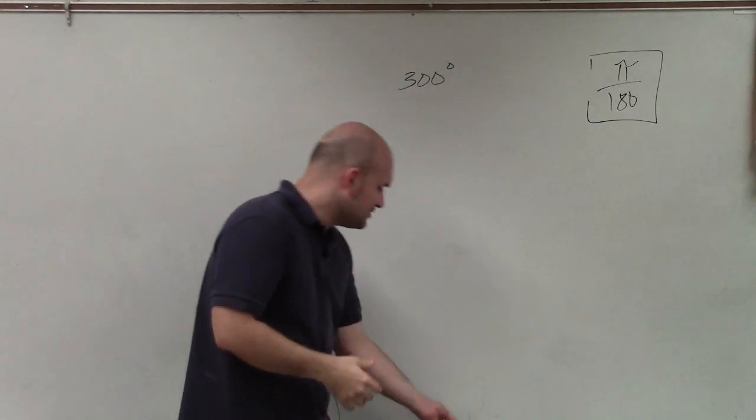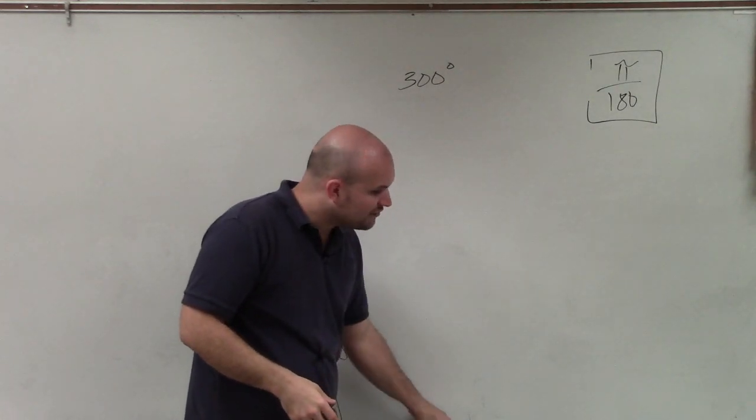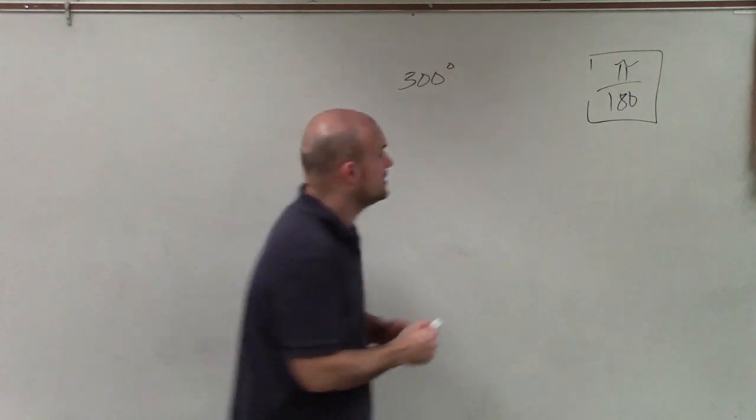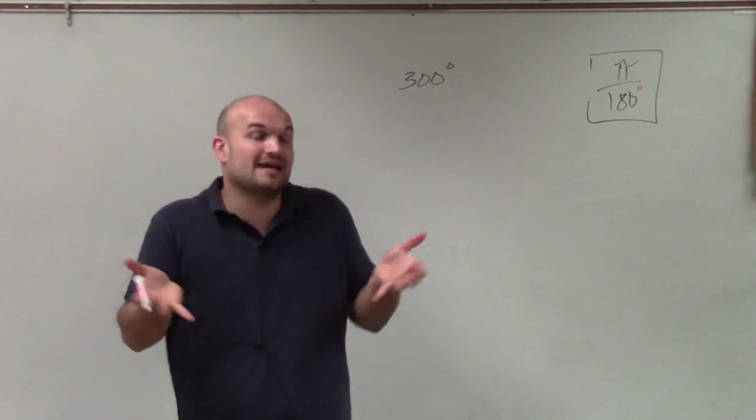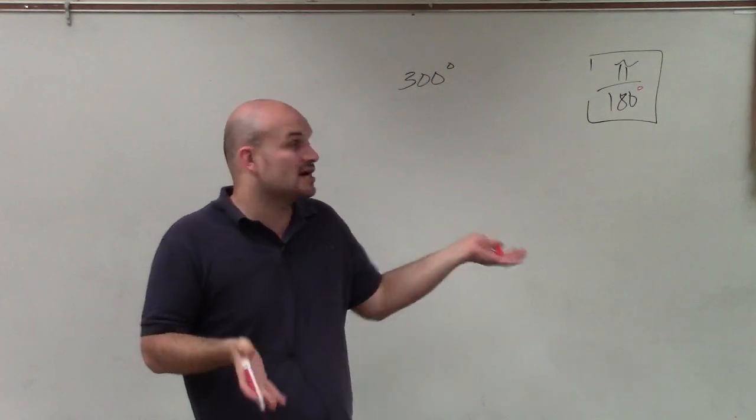To do that, we're going to multiply by a conversion ratio, which is pi over 180 degrees. You should understand that pi in radians is the exact same measurement as 180 degrees.